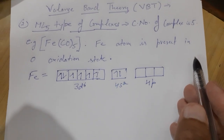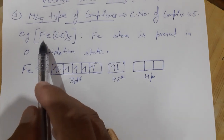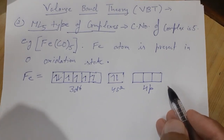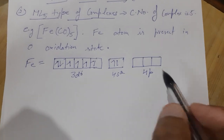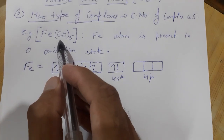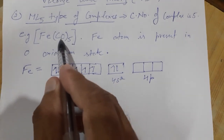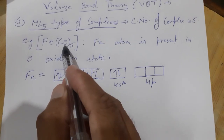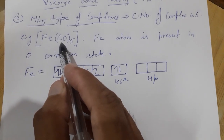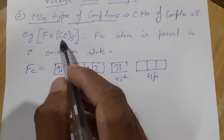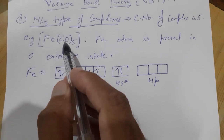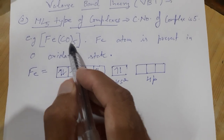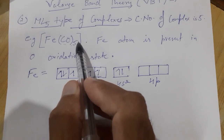No electron is lost from its outermost shell, so iron is in oxidation state zero. The ligand CO is one of the four strong field ligands. The four strong field ligands are CO, cyanide, ammonia, nitro, and if you want a fifth, it is ethylenediamine (EN), which also comes in the category of strong field ligands.